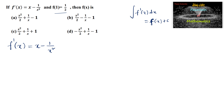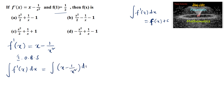Let us integrate on both sides. Integrating on both sides, we have integration of f'(x) dx equal to integral of (x minus 1) upon x squared dx. So integration of f'(x) gives f(x), which equals integral of x dx minus integration of 1 upon x squared, which we can write as x to the power of minus 2 dx.